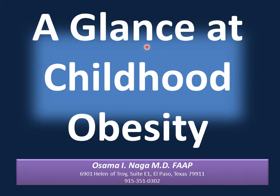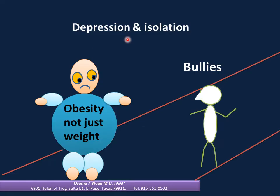Hello everyone, this is a glance at childhood obesity. The most common complication of obesity in pediatrics is depression and isolation. Ask your child if any bullying is occurring in school, and observe your child for any signs of depression and isolation.